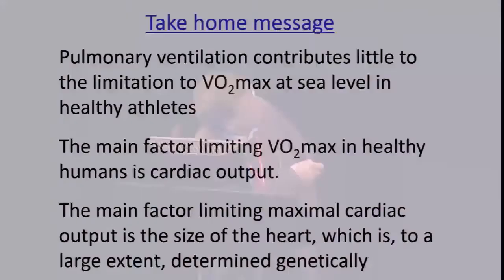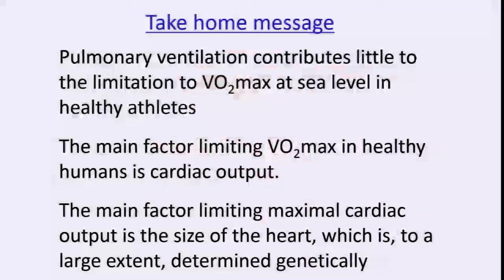In summary, pulmonary ventilation contributes little to the limitation of VO2max during exercise at sea level. The main factor limiting VO2max in healthy humans is cardiac output, and the main factor limiting maximum cardiac output is the size of the heart, which is to a large extent most likely genetically determined. Nevertheless, our elite athlete at 70 years old had a very big heart but lower cardiac output — we still need to answer why.